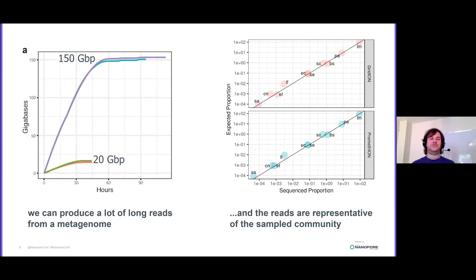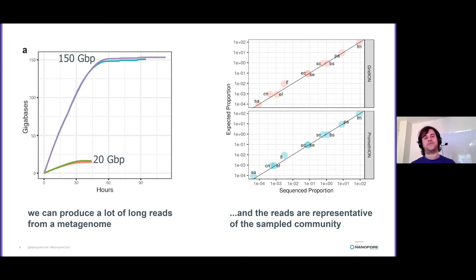In that paper, we showed that we could produce a lot of long reads from a metagenome. Both the PromethION runs got about 150 gigabases and the MinION runs about 20 gigabases. And more importantly, the reads were actually representative of the sample community — the sequence proportion actually matched the expected proportion in both communities.